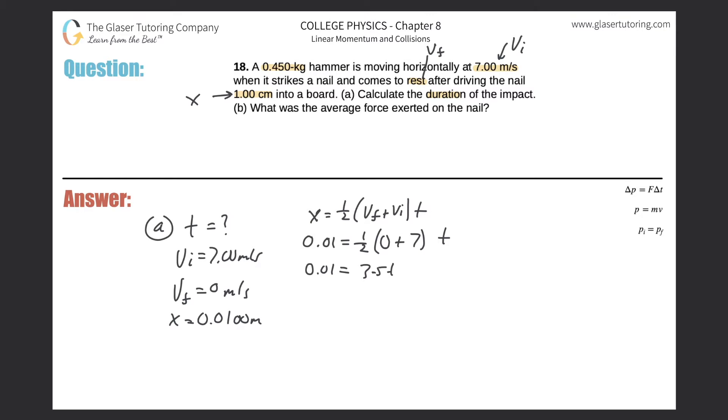So here we have 0.01 equal to 3.5 times time. Divide by the 3.5. 0.01 divided by 3.5.